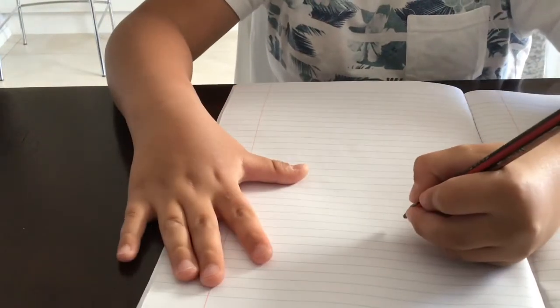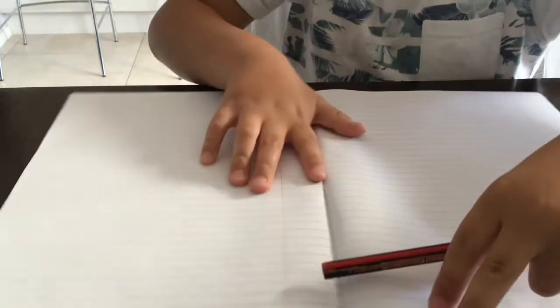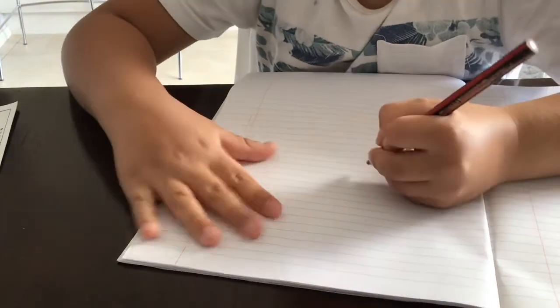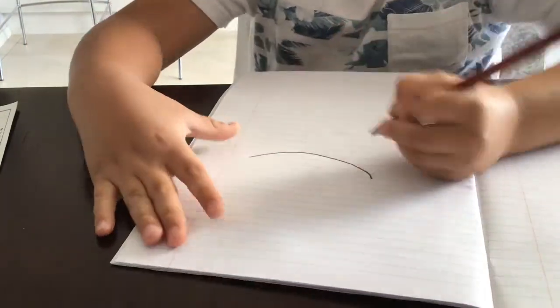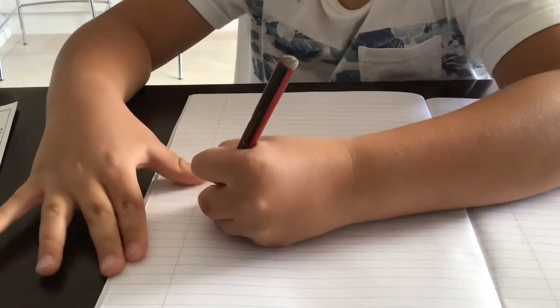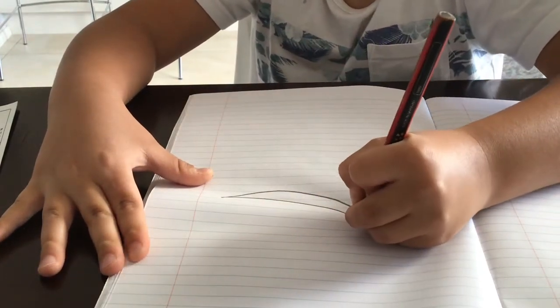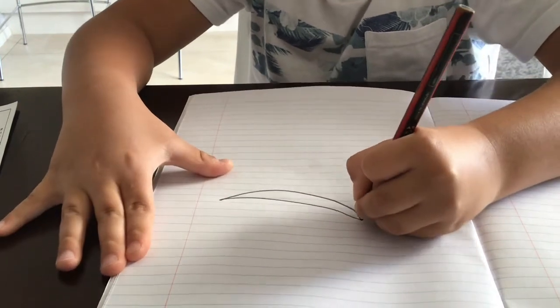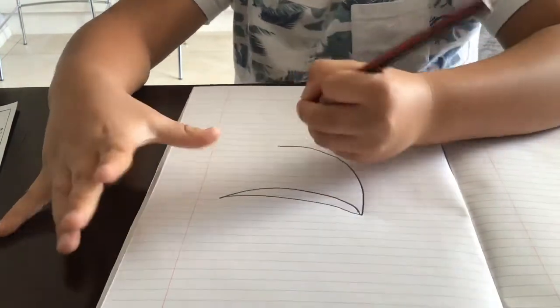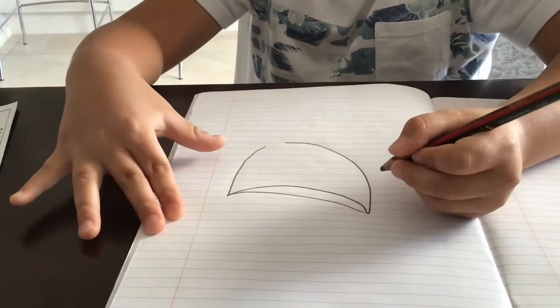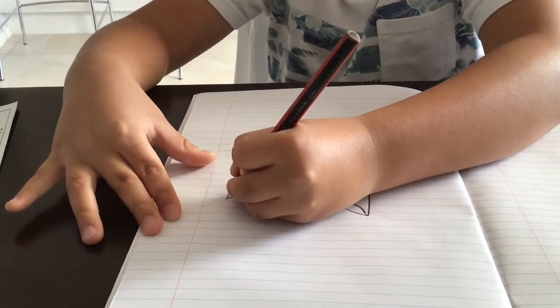So first you need to do that, so like a little smiley face, then do it like that. And then make a line going down, then stop, do another one there. And when you're done doing that, make another...